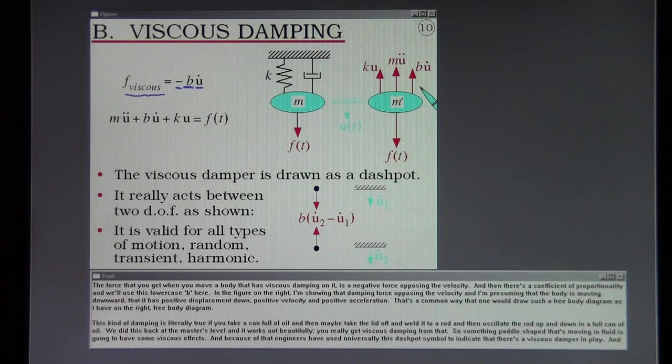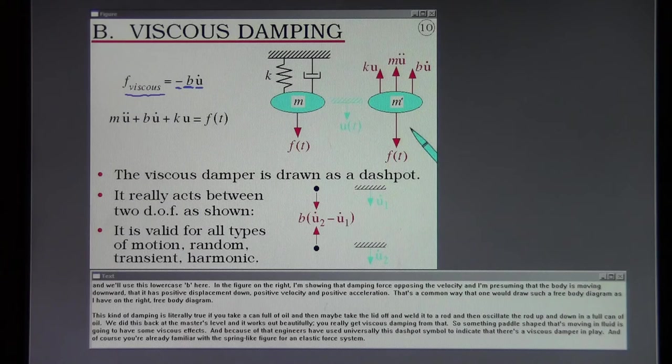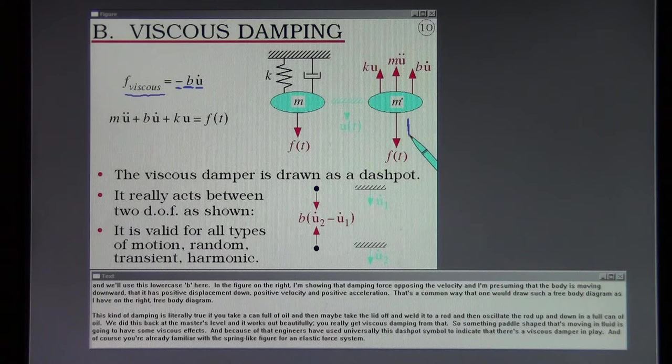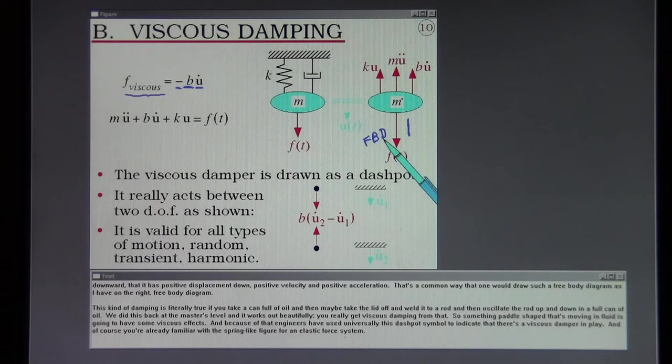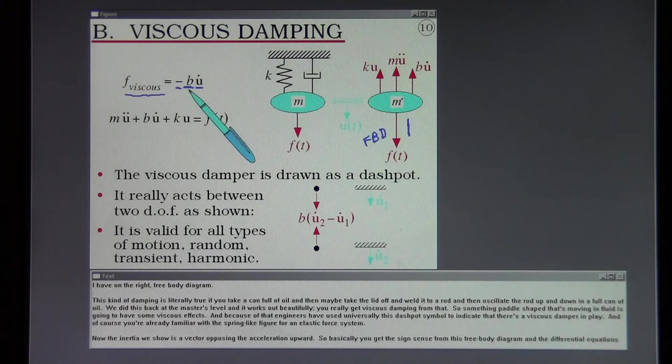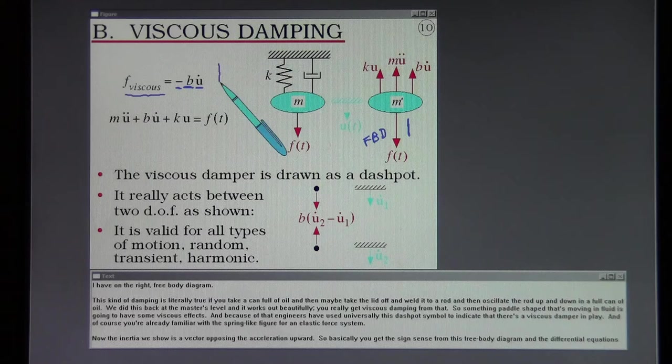In the figure on the right, I'm showing that damping force opposing the velocity. And I'm presuming that the body is moving downward, that it has positive displacement down, positive velocity, and positive acceleration. That's a common way that one would draw such a free body diagram as I have on the right.